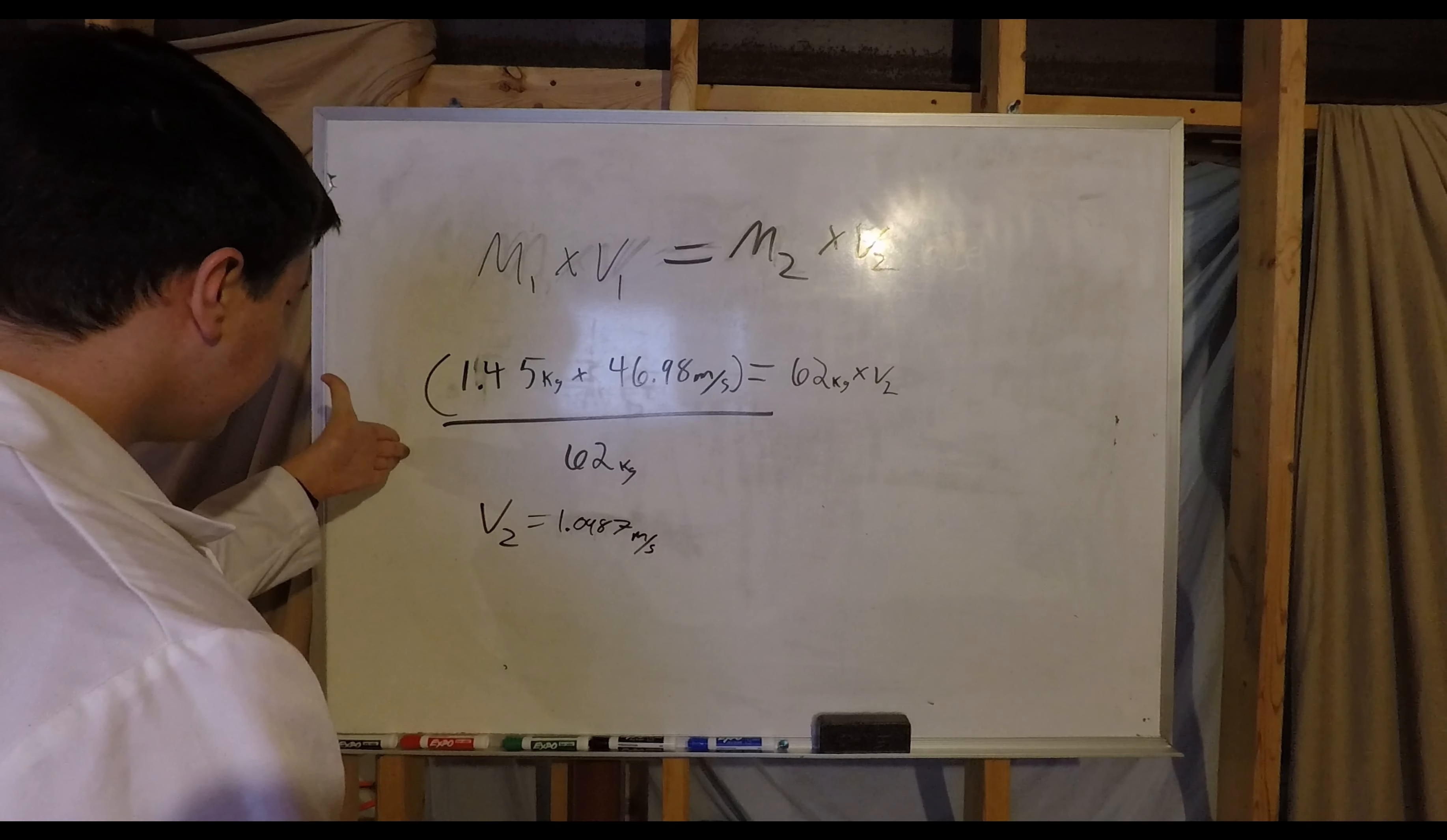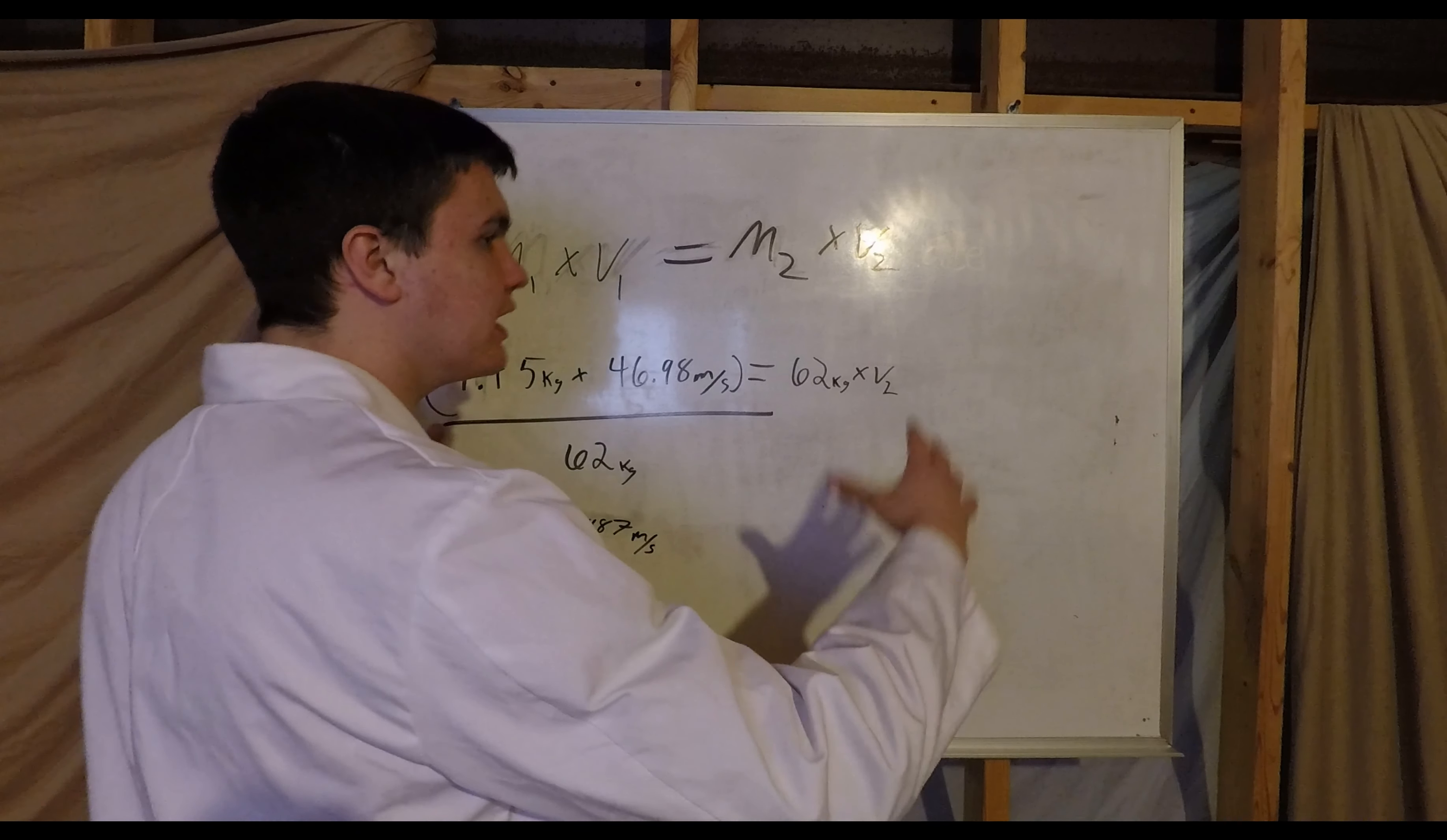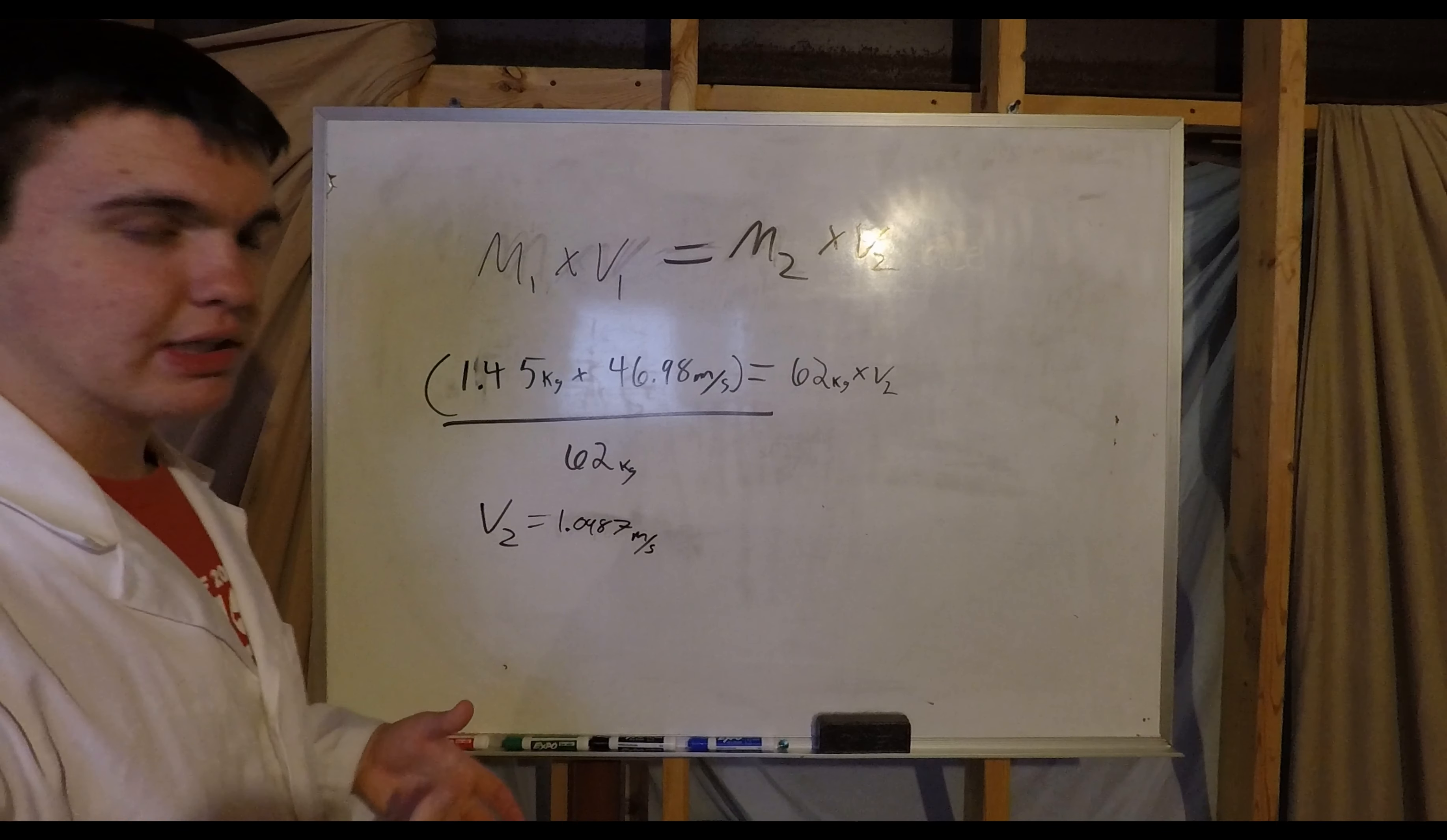Now granted, you will get a faster velocity throwing each baseball individually. That's because you're moving a smaller amount of mass each time, but you're still ejecting the same amount of mass each time. And that's how rockets work.